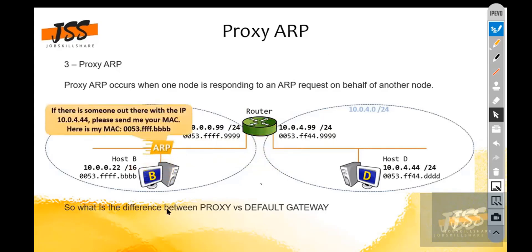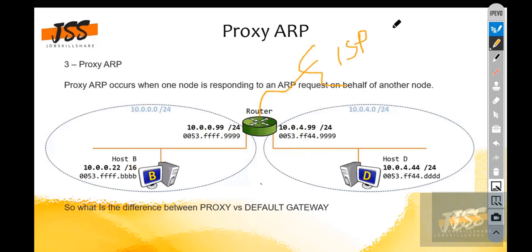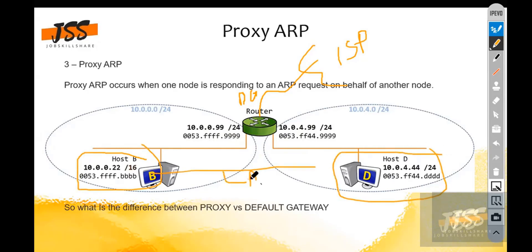There is a clear difference between Proxy ARP and Default Gateway. Every router has a default gateway configured to go to the ISP or the internet. When you are trying to communicate with another host in your LAN segment but that segment is segregated with the help of a router, that is Proxy ARP — the router takes care of one device on behalf of the other device.